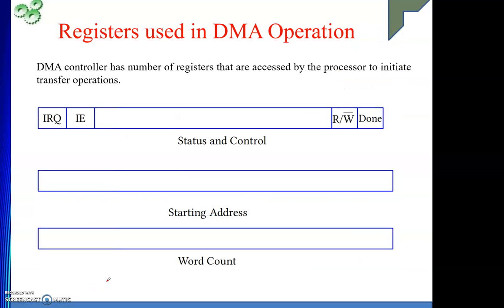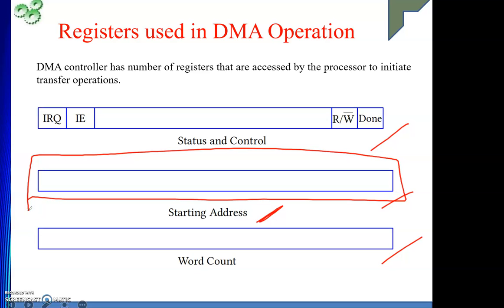As part of the DMA controller, three registers are present. The first is the starting address register. Whenever a DMA operation starts, the DMA controller needs to know from which memory location the communication begins. This register holds the base address of that memory location. The processor writes this starting address — for example, address 1000 — into this register before handing over bus control.